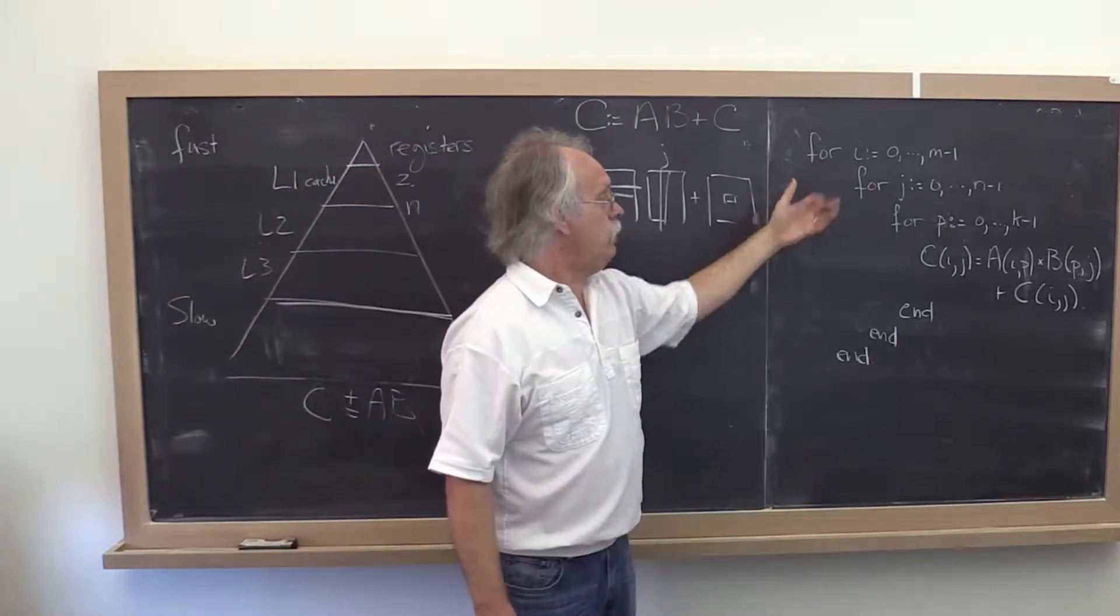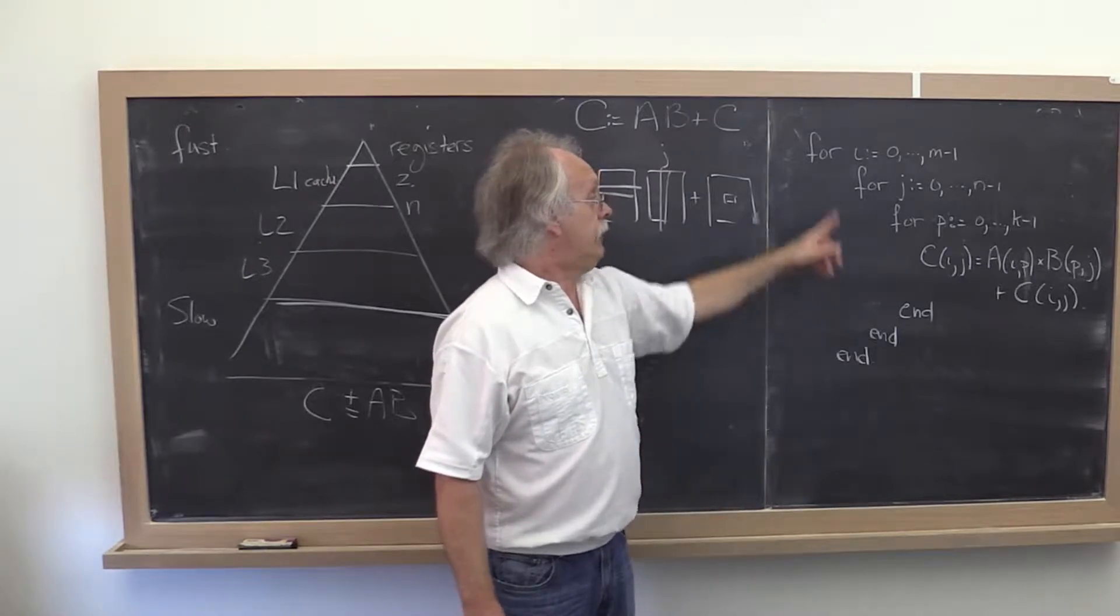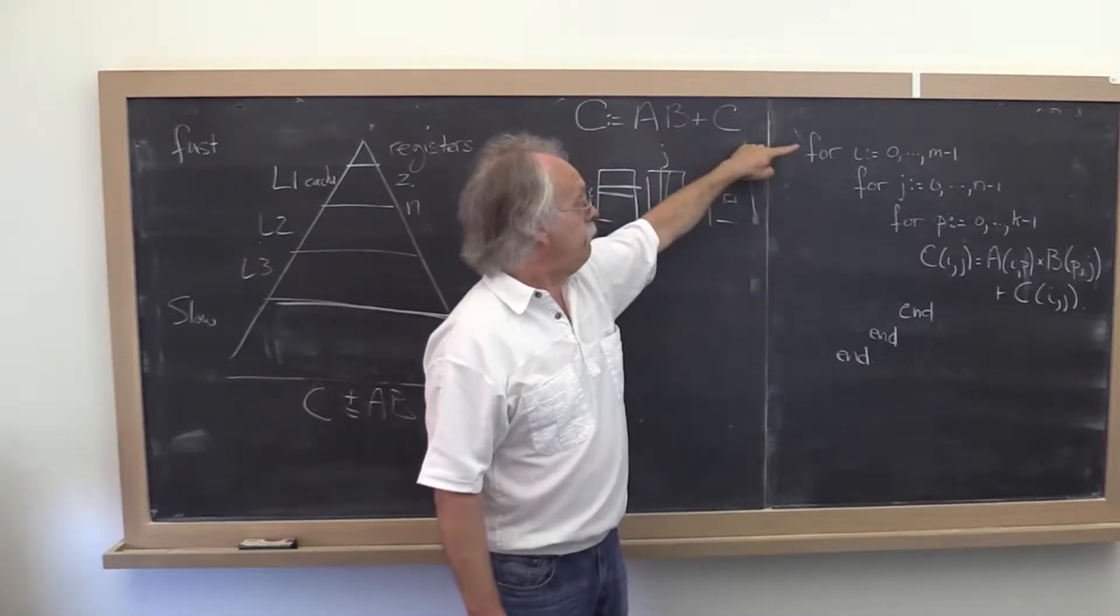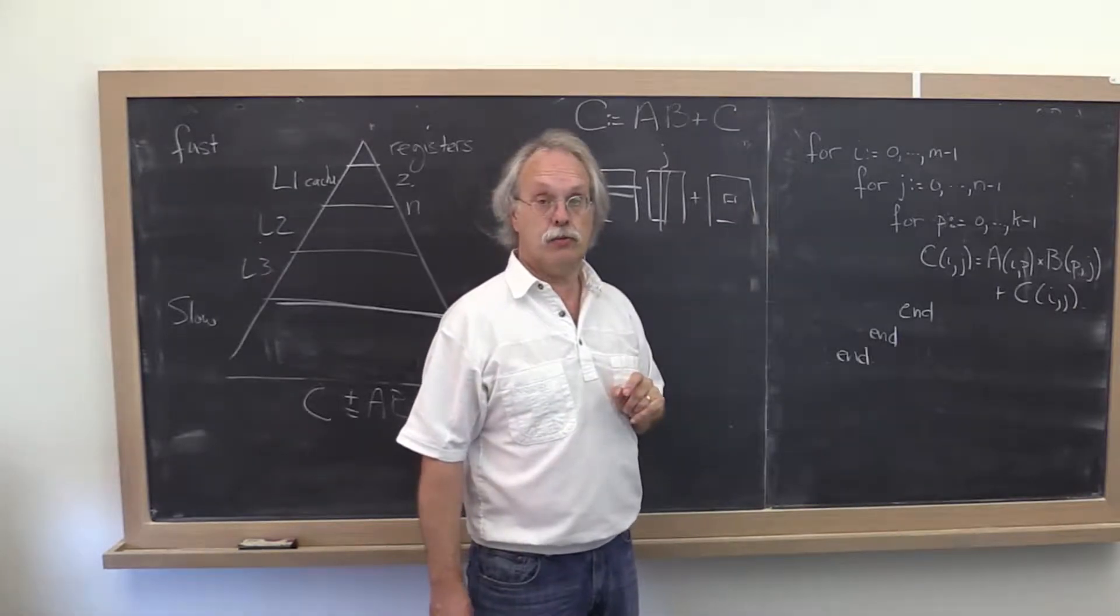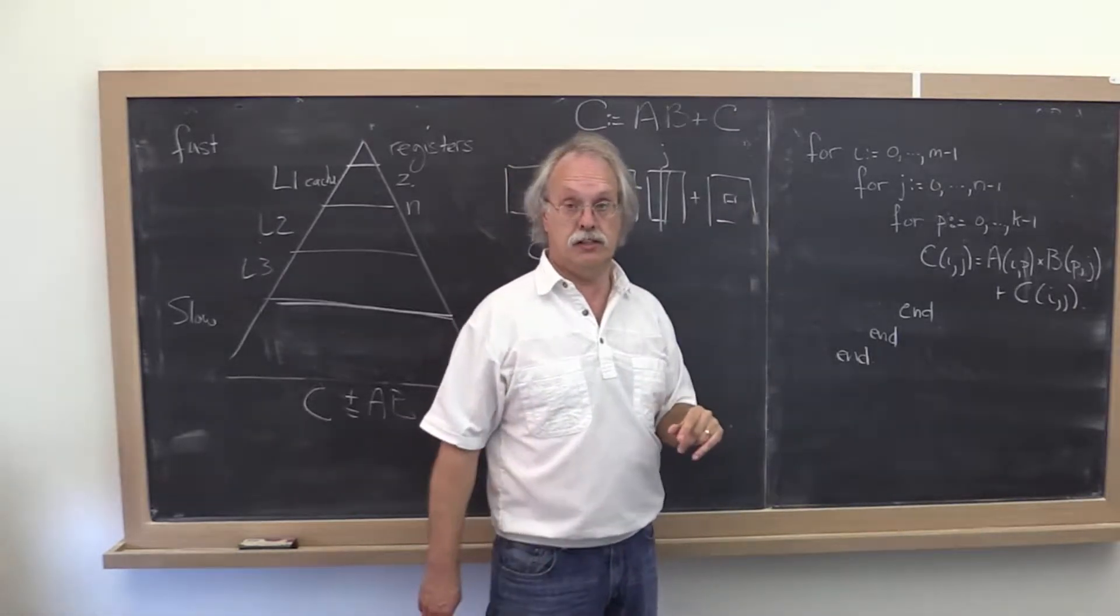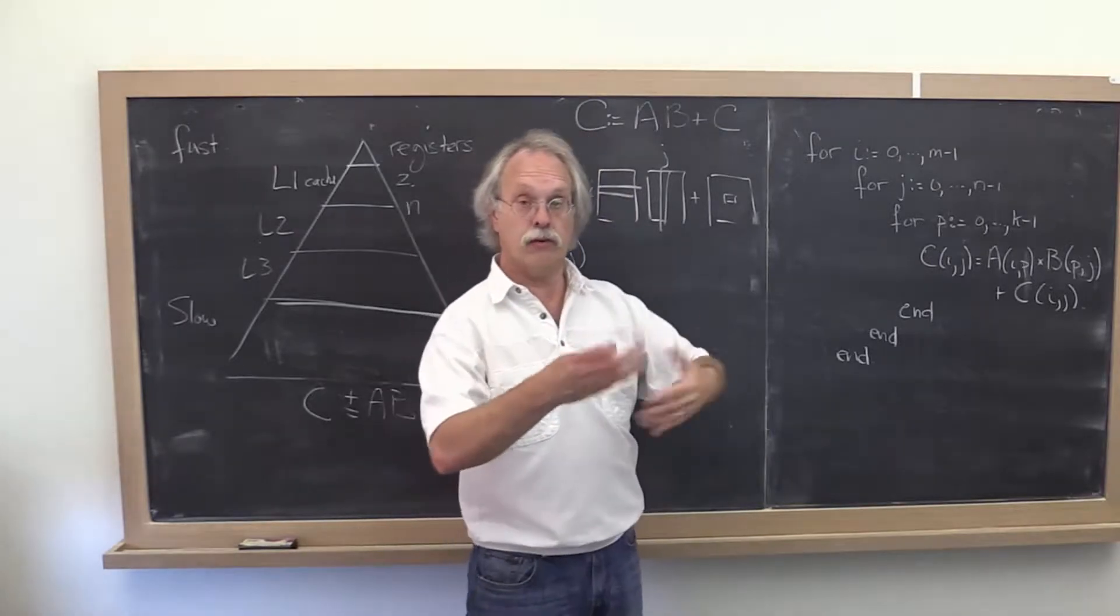You can actually rearrange these loops in any order you want, which means you have three choices for the outer loop, two choices for the next loop, and then one choice for the last loop. So there are actually six ways of arranging this. That's called reordering the loops.